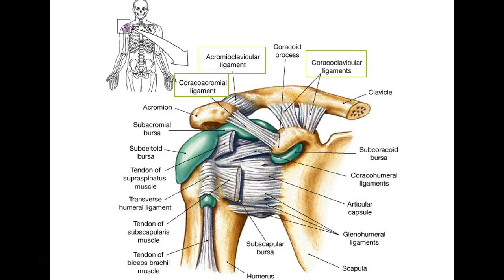That trick doesn't always work. On the scapula, a ligament between the coracoid process and the acromion — you can't say 'scapular scapular ligament.' You have to name the landmarks: coracoacromial ligament. From the acromion to the clavicle: acromioclavicular ligament. From the coracoid process to the clavicle: coracoclavicular ligament. Anything labeled 'tendon' — throw it out; there are no tendons on this test.